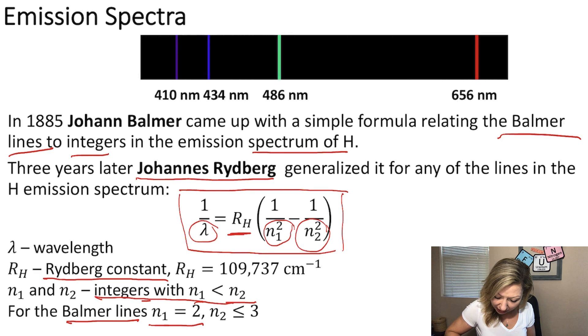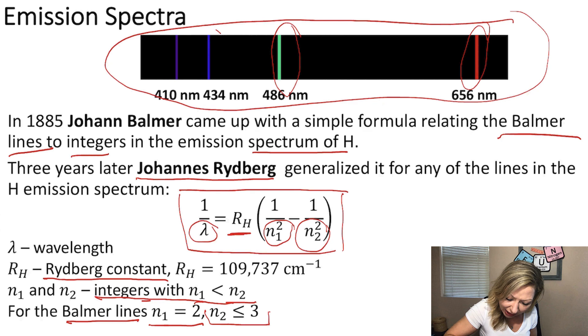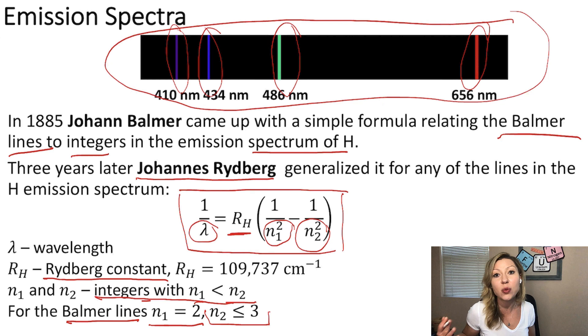How weird it is that this emission spectrum and the lines in it can be explained using integer numbers. Well, scientists didn't really understand what is going on until Nyrsborg came along. And we are going to talk about him in the next video. See you there.